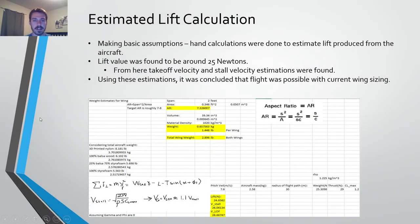Here's our first iteration estimated lift calculations. Making basic assumptions, we did hand calculations to find the estimated lift from the aircraft. The lift value is found to be about 25 newtons. From here, we found takeoff velocity and stall velocity. Then using these estimations, it was concluded that flight was possible with our current wing sizing.